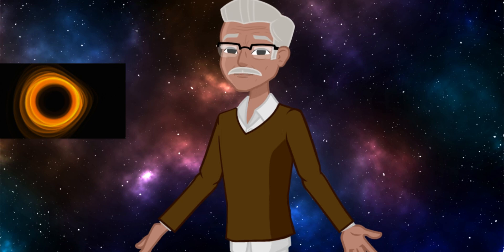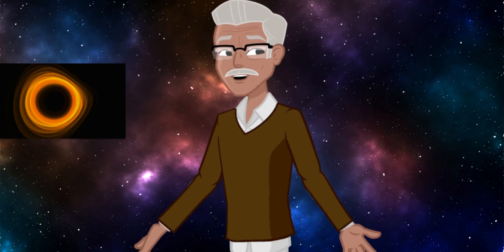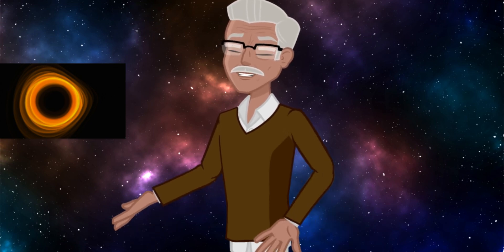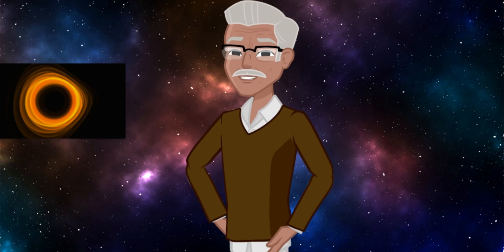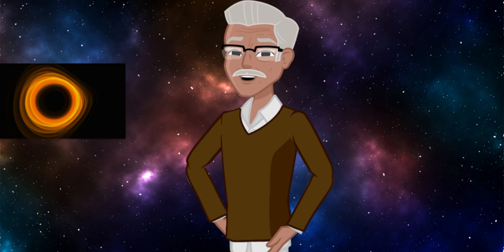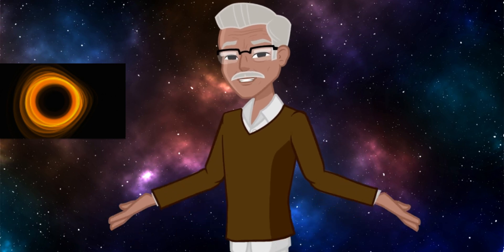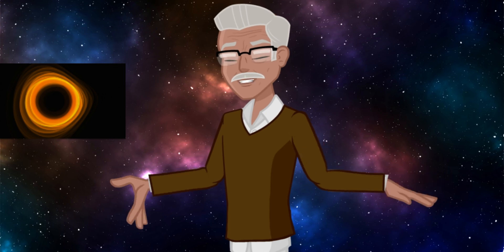Black holes are made when a really big star dies. When the star runs out of fuel, it explodes in a big bright flash called a supernova. After the explosion, the star's core collapses in on itself, creating a super dense object. This object is so dense that it has a very strong gravitational pull.